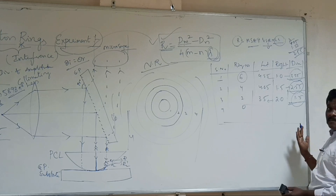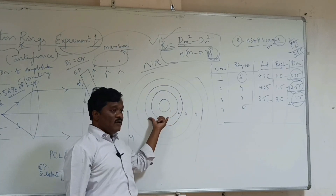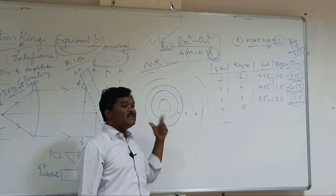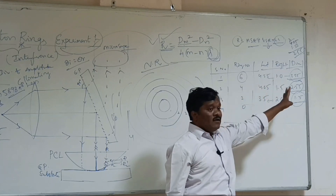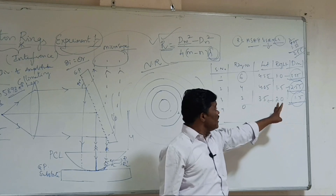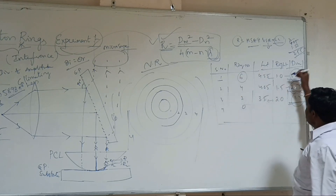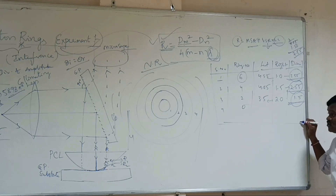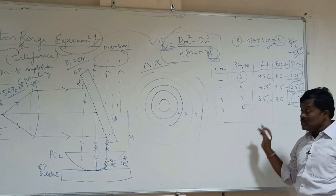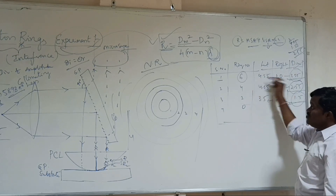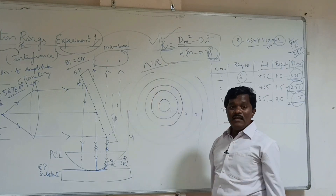It simply says that whichever is the lower ring has a lower diameter, and whichever is the higher ring has a higher diameter. In that way, you can cross-check while doing the experiment — whether your readings are right or not. You should have a clear understanding that if you are going from a higher ring downward, the ring's diameter should become smaller and smaller. So you know the diameter of individual rings — 6th, 4th, 2nd, or 10th, or whatever. Now, you are supposed to find the radius of curvature.